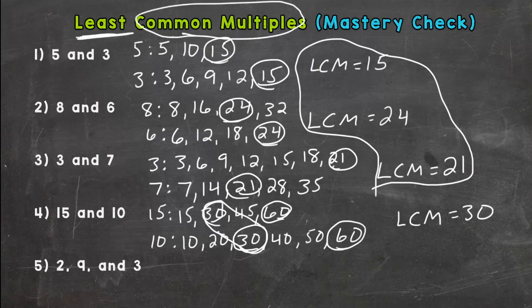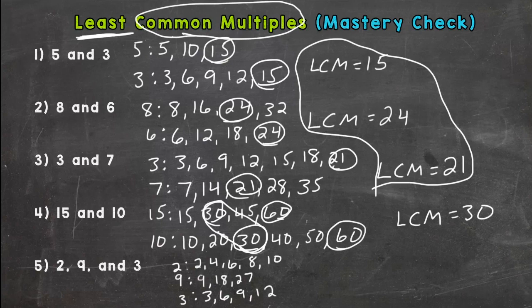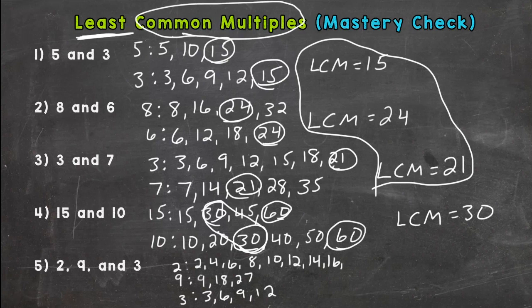And then number 5: 2, 9, and 3. 2, 4, 6, 8, 10. 9, 18, 27. 3, 6, 9, 12. Doesn't look like we have any matches there, so we're going to need to continue our lists. 12, 14, 16, 18.